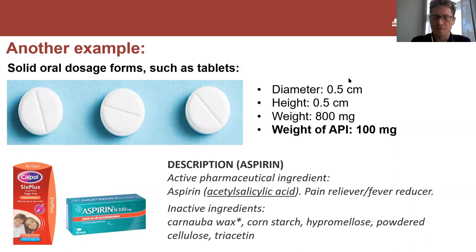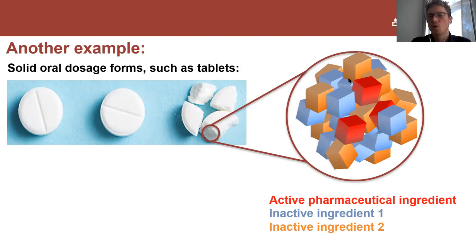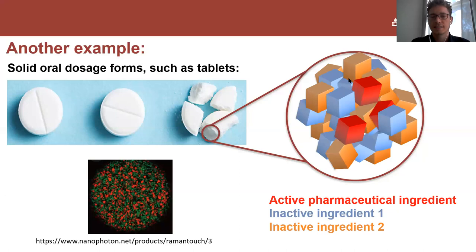Let's crack one open and see what's inside. If you break a tablet apart and zoom in, you would see crystals of the active pharmaceutical ingredient, but also particles or crystals of the inactive ingredients. This picture shows you nicely in red the distribution of the active pharmaceutical ingredient, the API, and in green the inactive ingredient. I'll explain in a minute how this image was recorded.